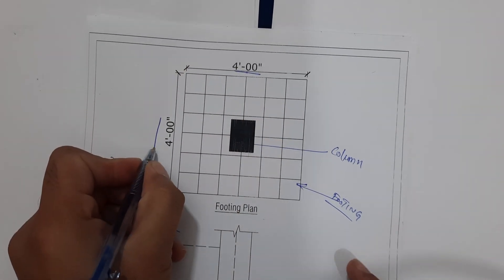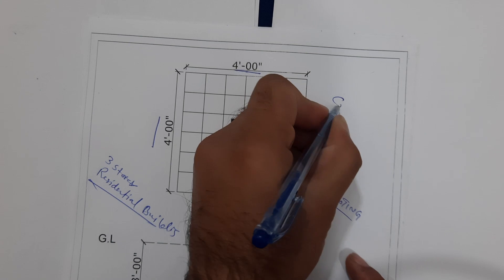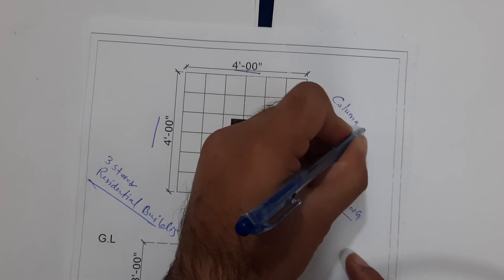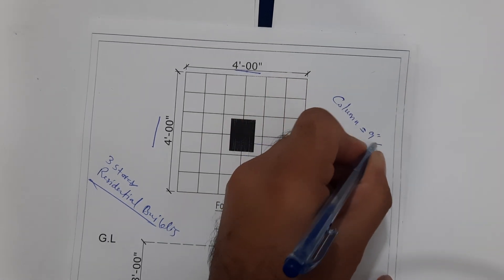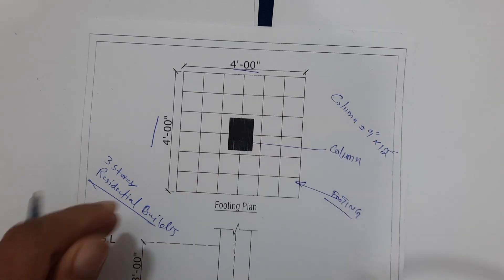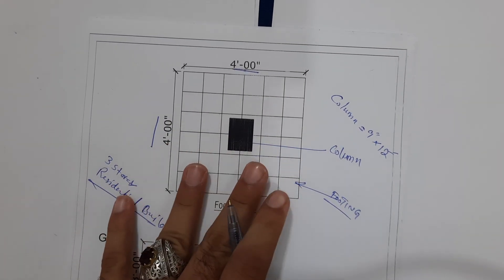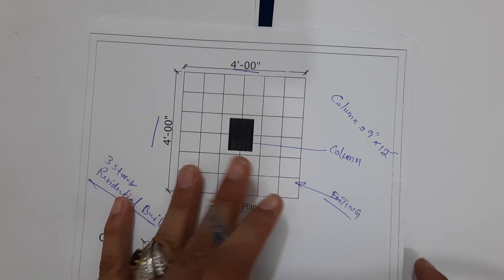Inside, the column size is 9 inches by 12 inches. This is for a three-story building: G plus two story, ground floor plus first floor plus second floor.